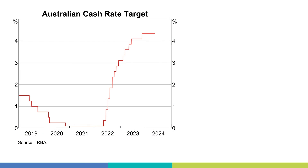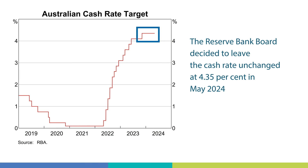Let's finish up by looking at monetary policy and the most recent decision. At its May meeting, the Board decided to leave the cash rate unchanged at 4.35%. The Board expects it will be some time before inflation is sustainably within the target range. Keeping the cash rate at the current level is important to reduce inflationary pressures and supports the objectives of bringing inflation to target while ensuring the labour market remains consistent with full employment.